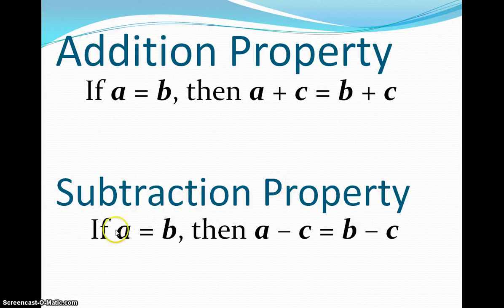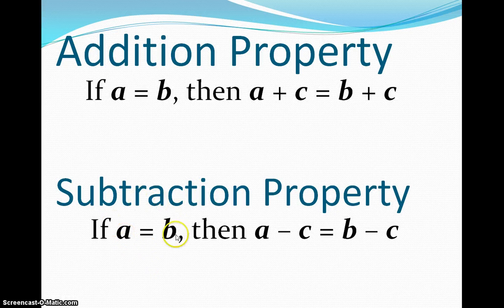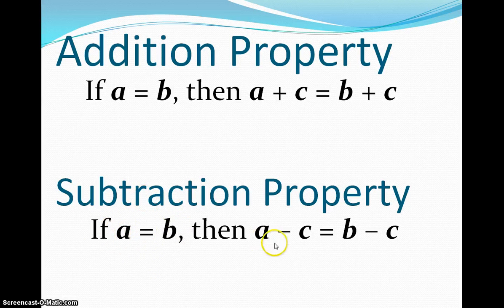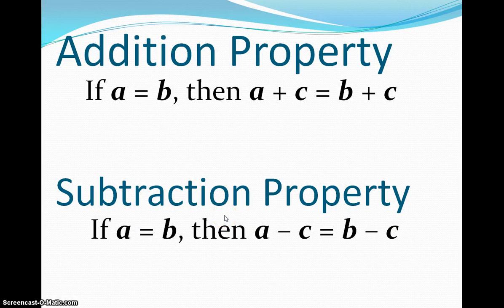Subtraction is pretty much the same exact thing. If A is equal to B, then A minus C is equal to B minus C. You can just visualize your squiggle. And if I know that this is true, this A is equal to B is true, then I know that if I subtract C from both sides, then the balance will still be equal to each other.